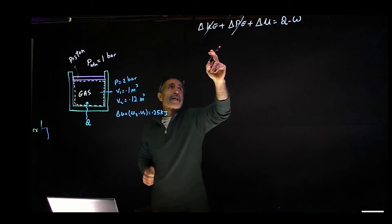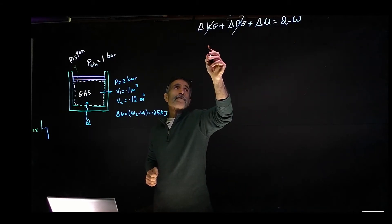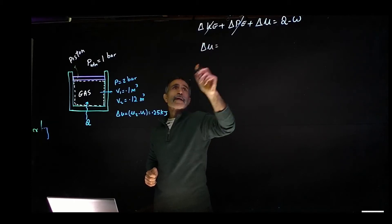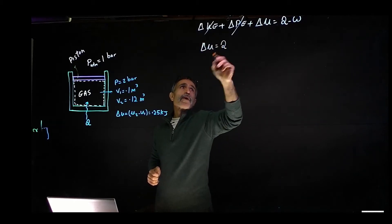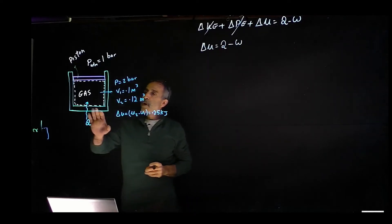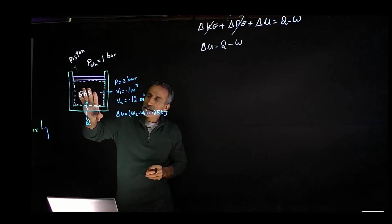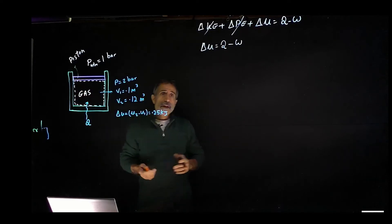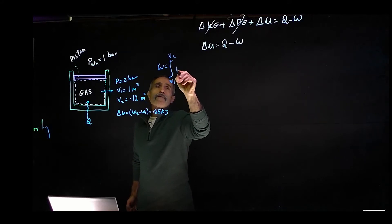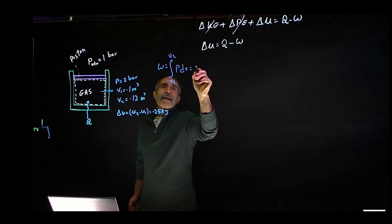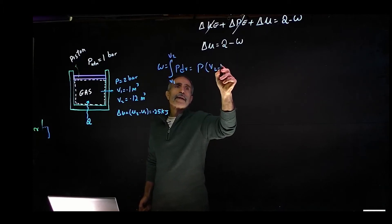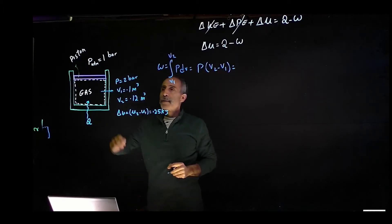So this equation comes out to delta U, which we know, equals Q, which we don't know, minus W, work we don't know. So let's find out what is the work done on the system here. We come out to integration from V1 to V2, PdV, and that's the same as saying P times V2 minus V1. And P is 2 bar.